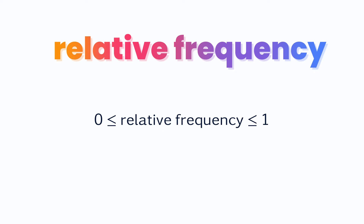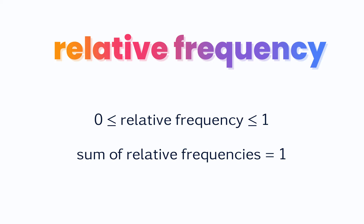A relative frequency is always a number between 0 and 1, and the most common representation is a decimal. The sum of all relative frequencies in the same frequency table always adds up to 1.